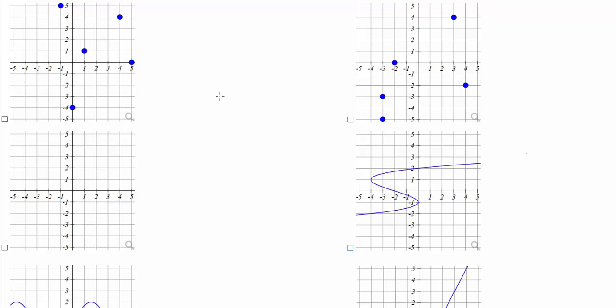The vertical line test asks, can I draw a vertical line anywhere on this graph that goes through more than one point on the graph?